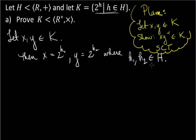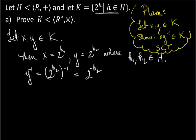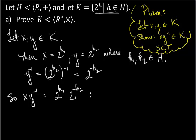Even if you don't see what you're going to do, just interpret the membership rules and start writing, and you'll see where to go. We want XY inverse. What would Y inverse be? Y inverse would be 2 to the H2 inverse, which we have proven is 2 to the minus H2. So XY inverse equals 2 to the H1 times 2 to the minus H2, which is 2 to the H1 minus H2.